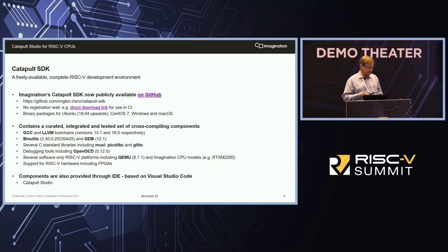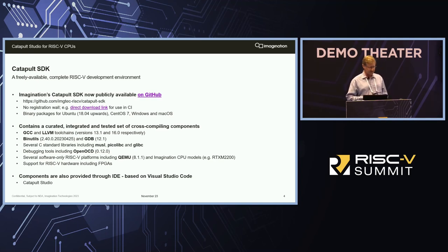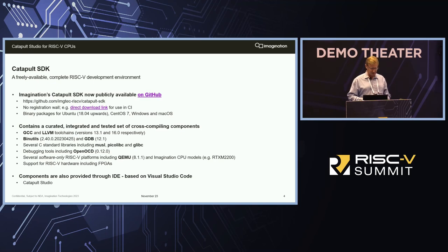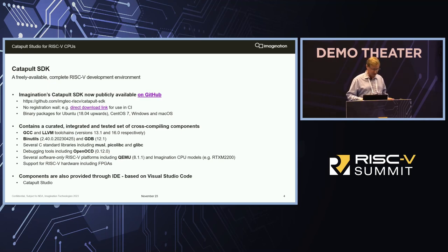Importantly, the message I want to get across is that there are software-only RISC-V platforms as part of this, so you don't need to have hardware to start doing RISC-V development today. There are Imagination CPU models and a recent QEMU build in there, which I'll demonstrate in a second. If you do have hardware, we'll support that too.